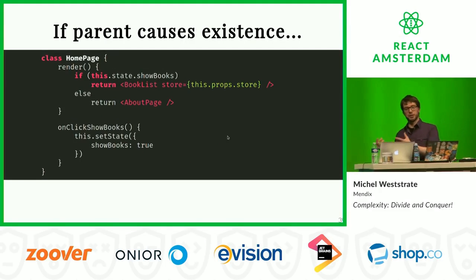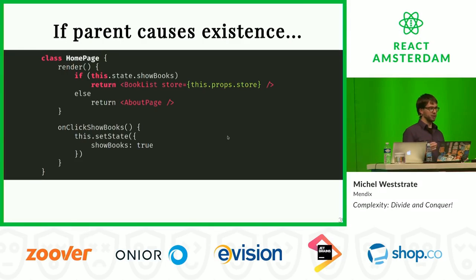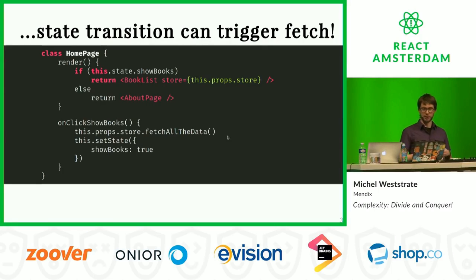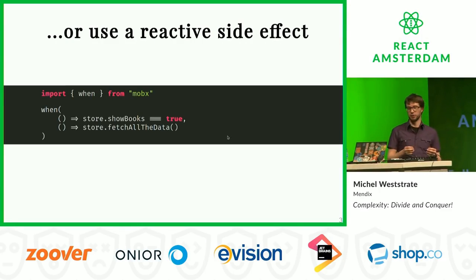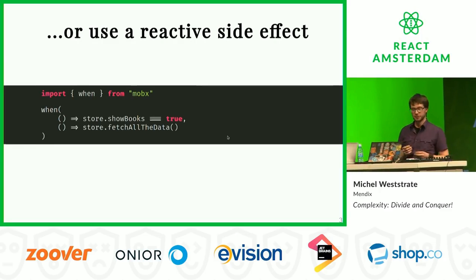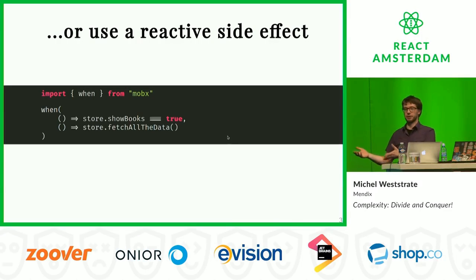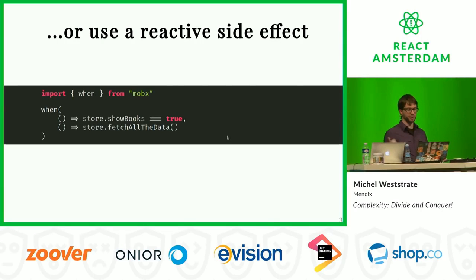We can just pull it out, and our component that was first a complex component fetching data is now just a simple function component. If the parent causes the existence of a component, then somewhere there is a state transition that causes my book list to exist - for example, if I click 'show books'. In that case I can lift that responsibility up to this state transition. People with more MobX experience often model that as a reactive side effect: if state changes in a certain way, components are rendered, and for the same state change, we can start fetching data.